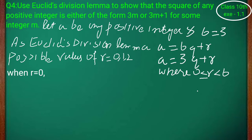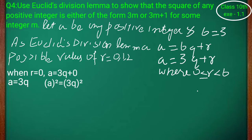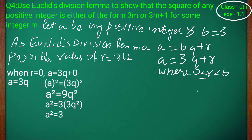When r equal to 0، تو equation بنے گی a equal to 3q plus 0، یعنی a equal to 3q۔ Square کریں گے both sides تو a² equal to (3q)² equal to 9q²۔ 3 کو common لے لیں گے تو a² equal to 3(3q²)۔ اس 3q² کو let k1 کر لیتے ہیں۔